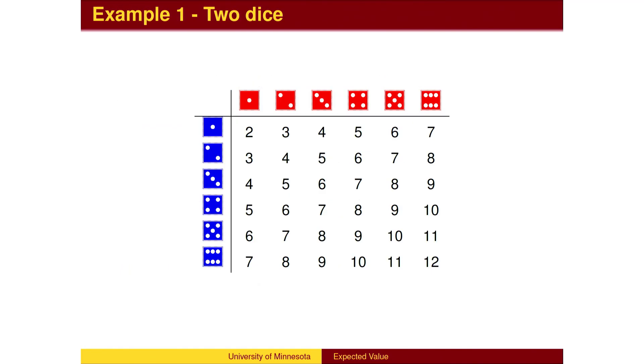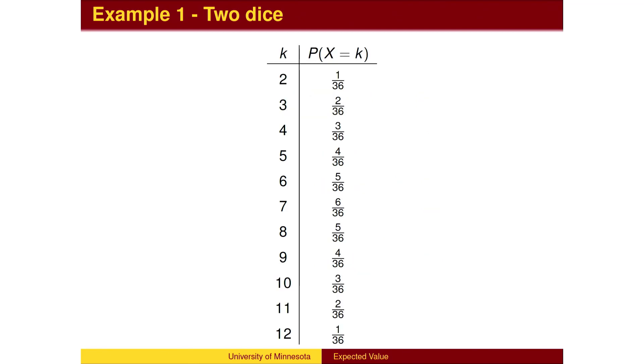Here's an example. Rolling two six-sided dice, one red and one blue. There are 36 equally likely outcomes. For each, we can calculate the total. We can list the possible values of the random variable and the associated probabilities.